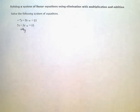So I need to multiply this bottom equation by something to change this negative 3y term into a positive 9y.